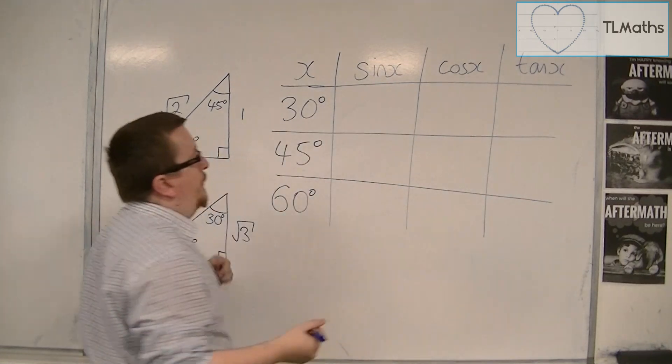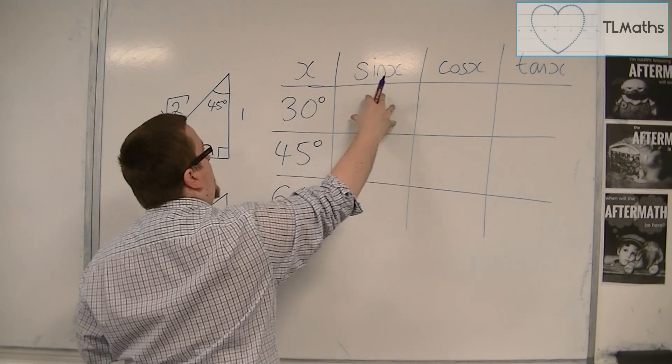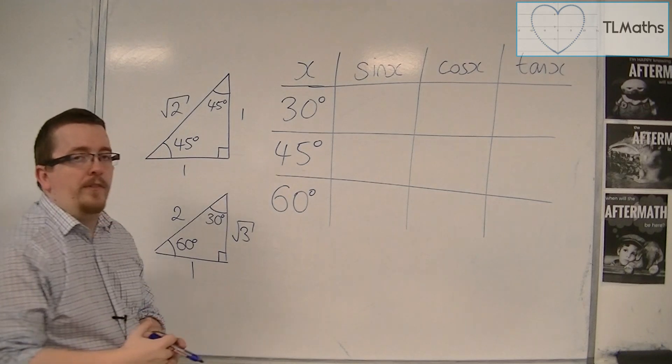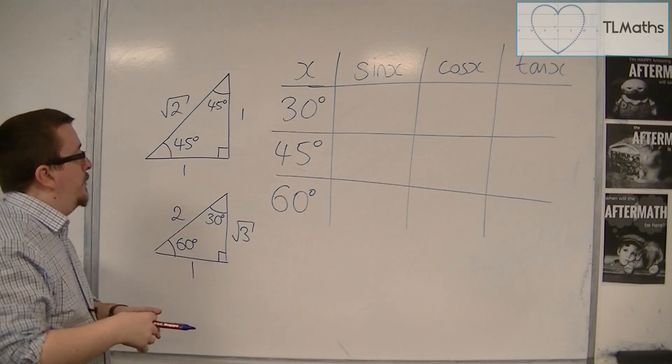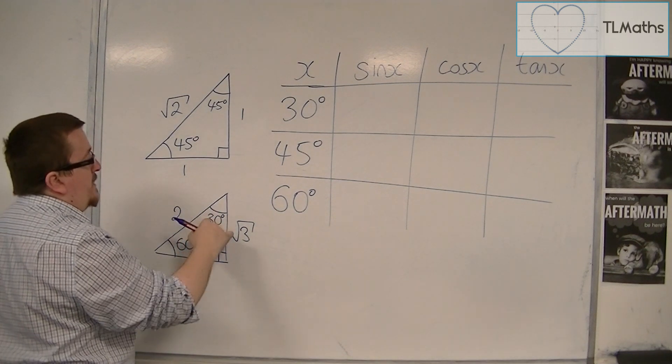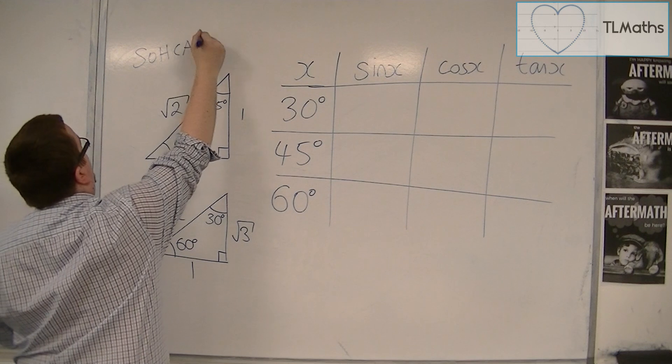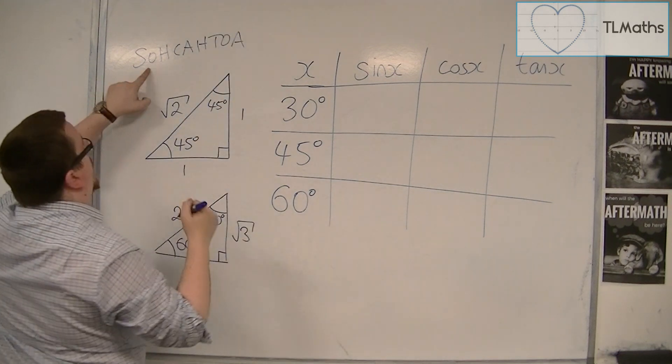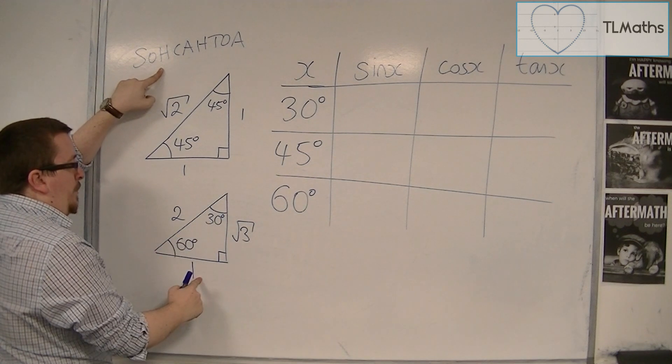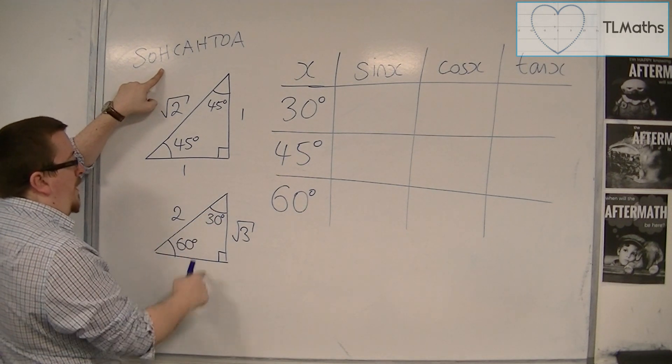So what we're able to do now is say exactly what sine of 30 degrees is. Or cos of 60 degrees is. And we can use these two triangles. So sine of 30, here's the angle of 30. And sine, using SOHCAHTOA, is opposite over hypotenuse. So if that's the angle, that's the opposite. That's the hypotenuse. So sine of 30 is 1 over 2.